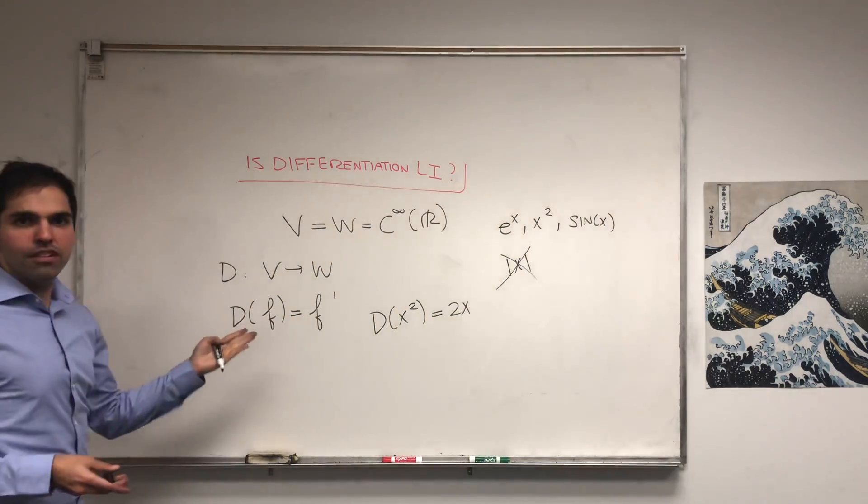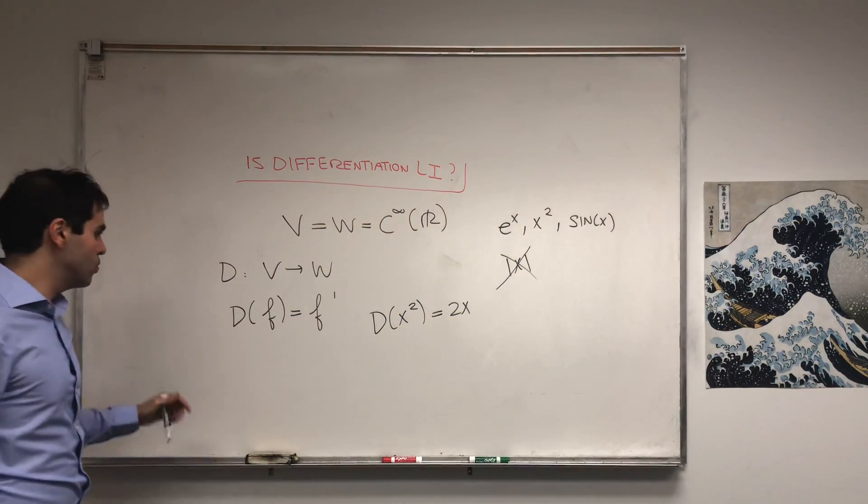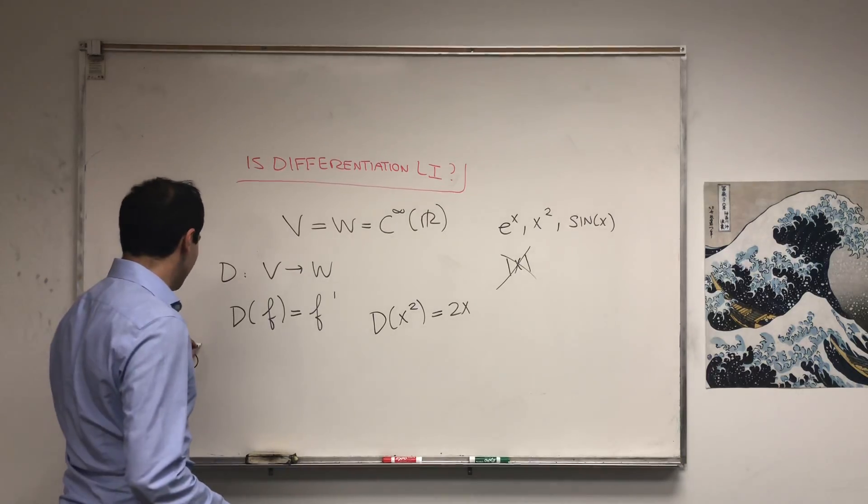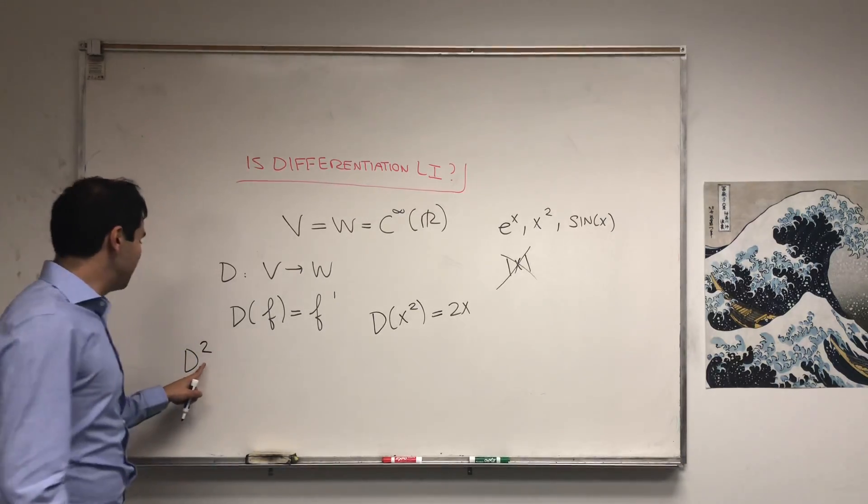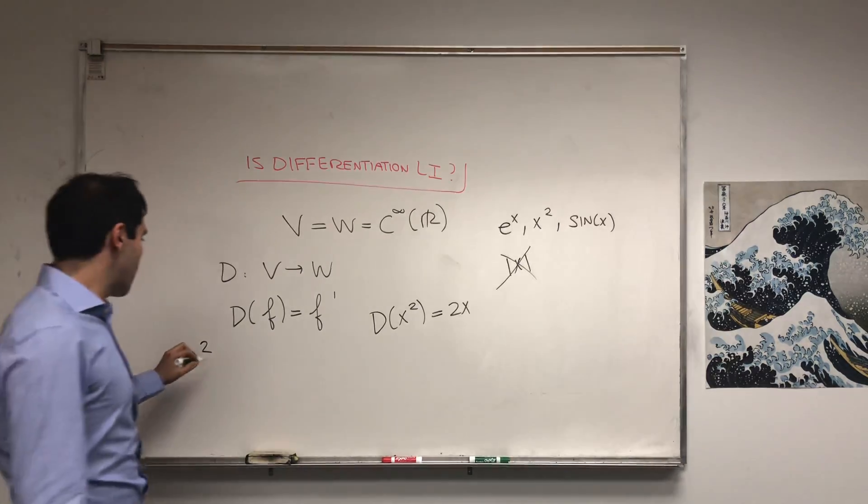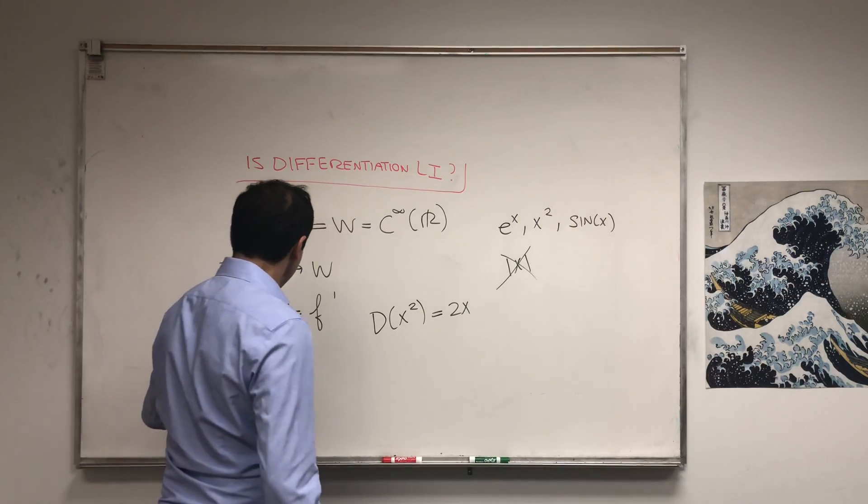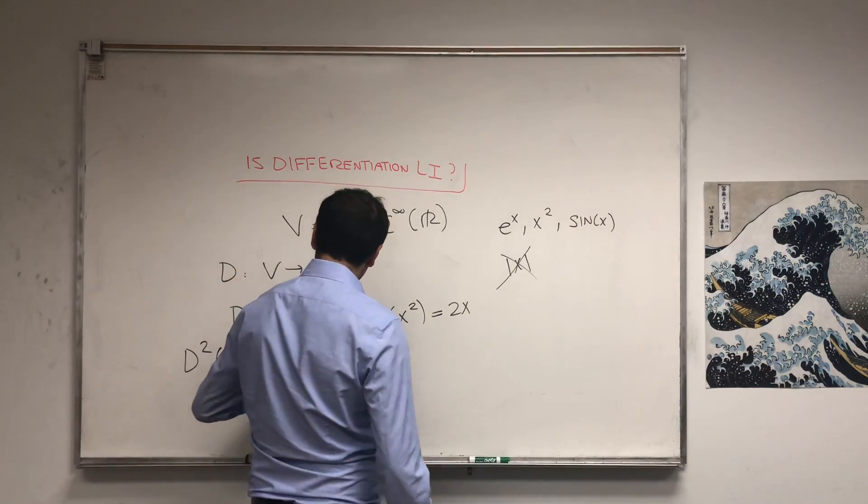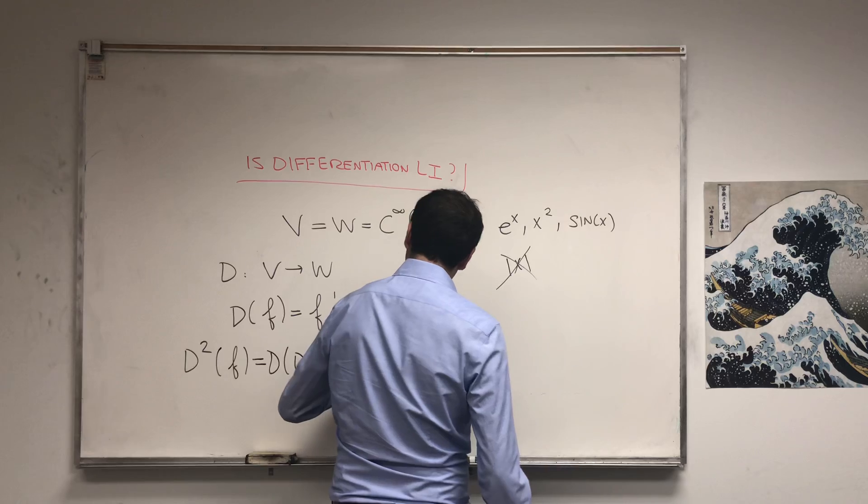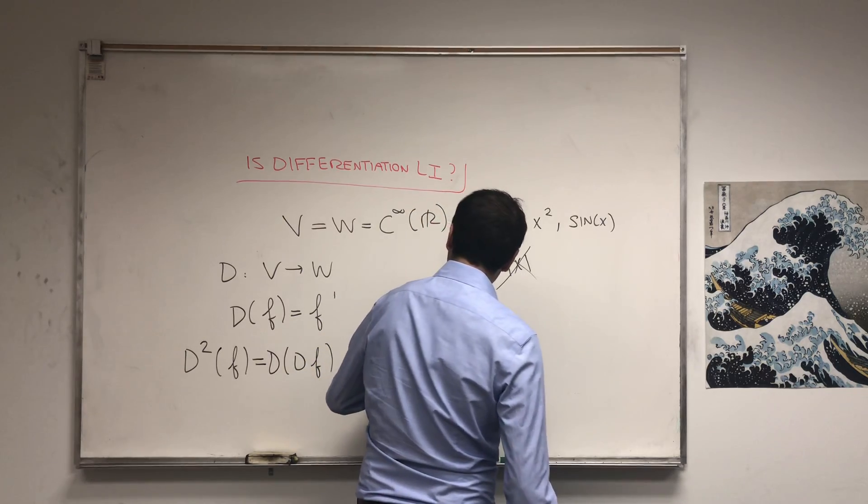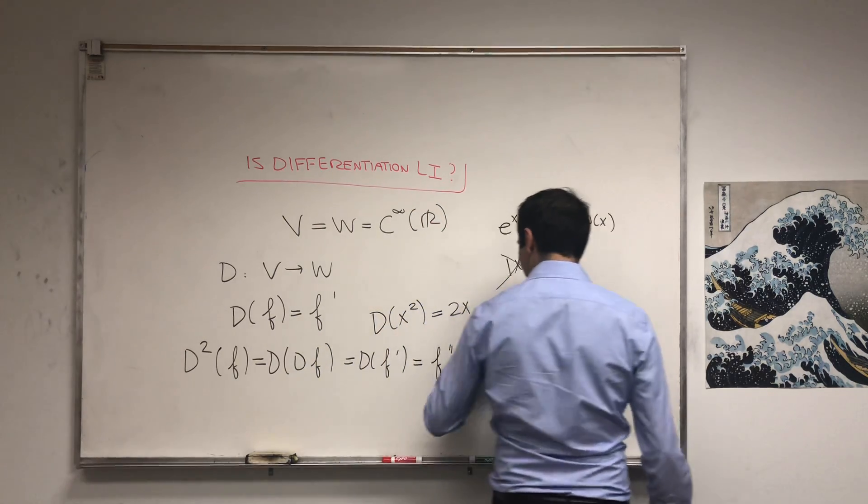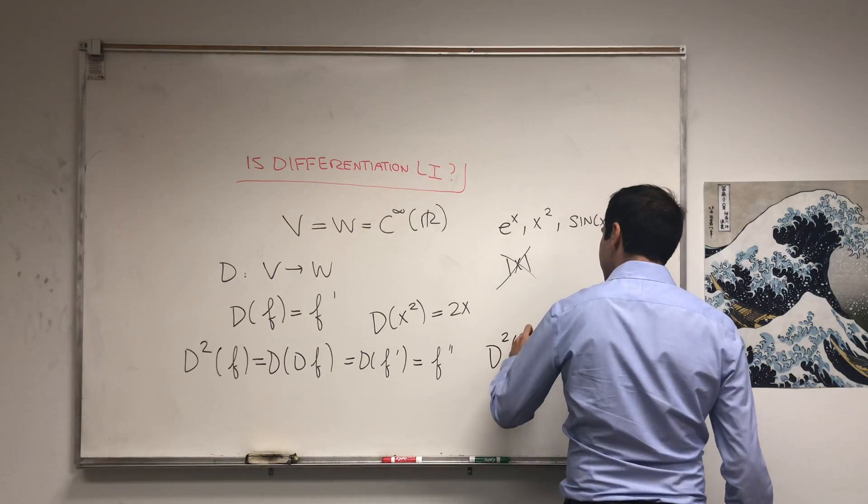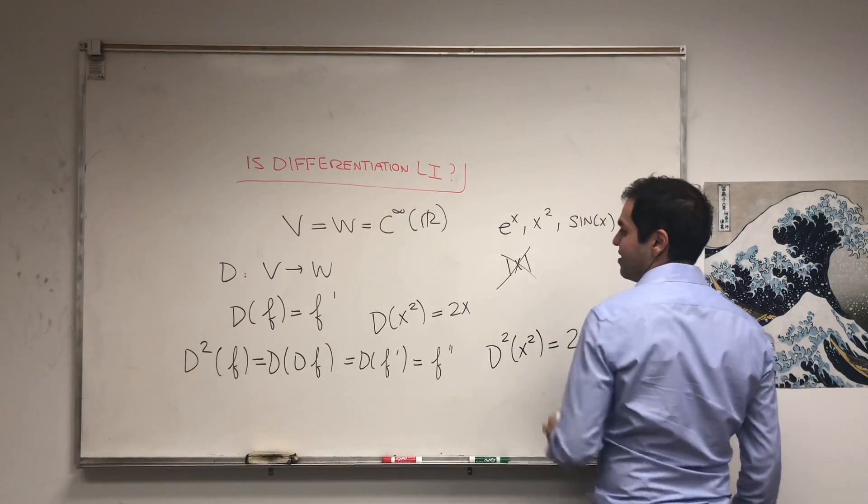And moreover, once you have D, you can compose them. So you can define DD or D², so D²(f) is D(Df), and that's D(f'), and that's really f''. So if you want D² of x², you differentiate this twice and you get 2.